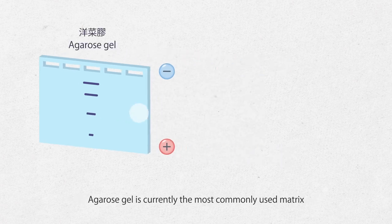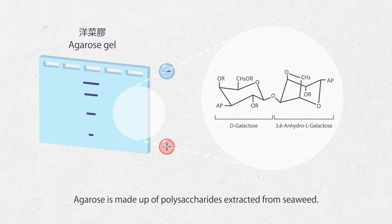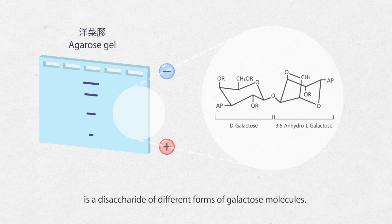Agarose gel is currently the most commonly used matrix for separating nucleic acid fragments. Agarose is made out of polysaccharides extracted from seaweed. The repeating unit of the polymer is a disaccharide of different forms of galactose molecules.